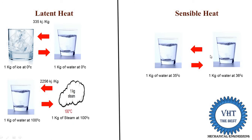When only the temperature changes with no phase change, it is known as sensible heat. The sensible heat required to change the temperature by 1 degree is equal to 4.187 kilojoules per kg for water. If the quantity is increased and the temperature difference is greater than 1, we use the equation Q = m × Cp × ΔT, where m is the mass of water, Cp is 4.187 kJ/kg·K, and ΔT is the difference between the initial and final temperatures. That is the basic difference between latent heat and sensible heat.